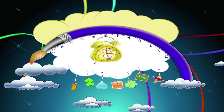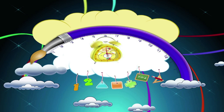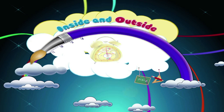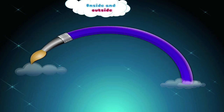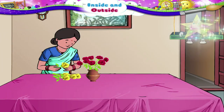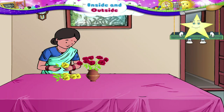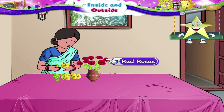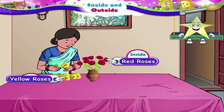Inside and outside. Hi, Starry! Mother has arranged the red roses inside the vase. But the yellow roses are still outside the vase.